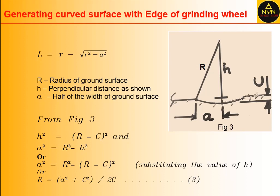Substituting the value of h in this equation, we have a² = R² - (R - C)². Solving this equation, we get R = (a² + C²) / 2C (equation 3). Using this equation, we can calculate the radius of the ground surface, grinding wheel angle, and parameters like ground surface depth and width.